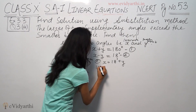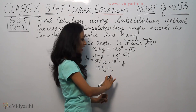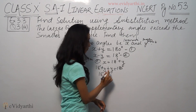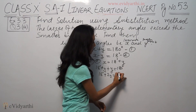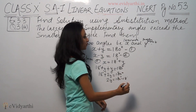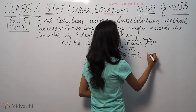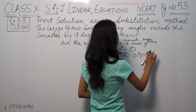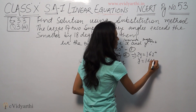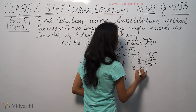Substituting x into the first equation: 18 plus y plus y equals 180 degrees. So 2y equals 180 degrees minus 18 degrees, which is 162 degrees. Therefore y equals 162 divided by 2, which gives us y equals 81 degrees.